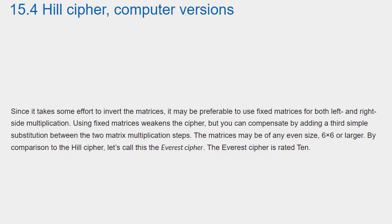Since it takes some effort to invert the matrices, it may be preferable to use fixed matrices for both left and right side multiplication. Using fixed matrices weakens the cipher, but you can compensate by adding a third simple substitution between the two matrix multiplication steps. The matrices may be of any even size, 6x6 or larger. By comparison to the Hill cipher, let's call this the Everest cipher. The Everest cipher is rated 10.